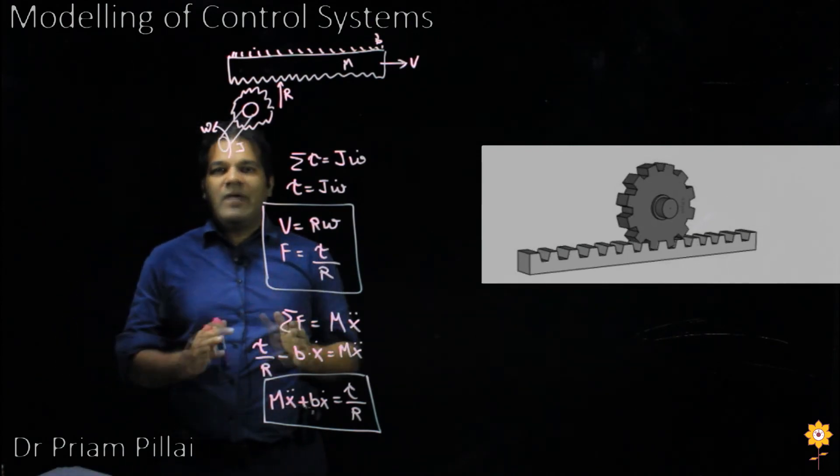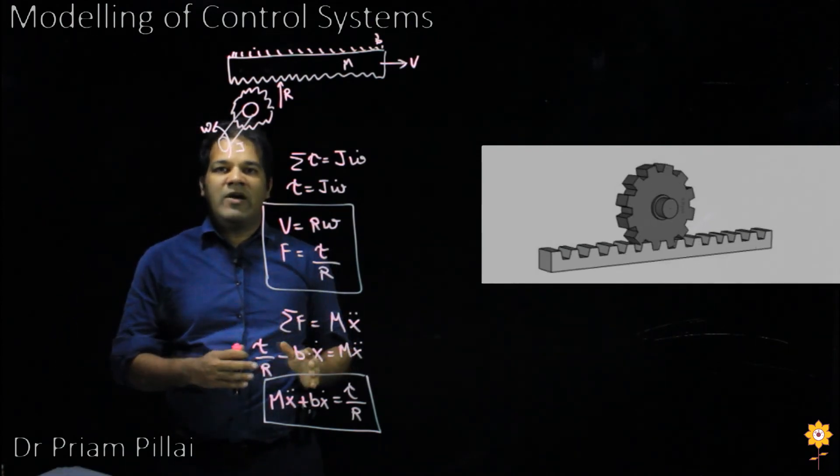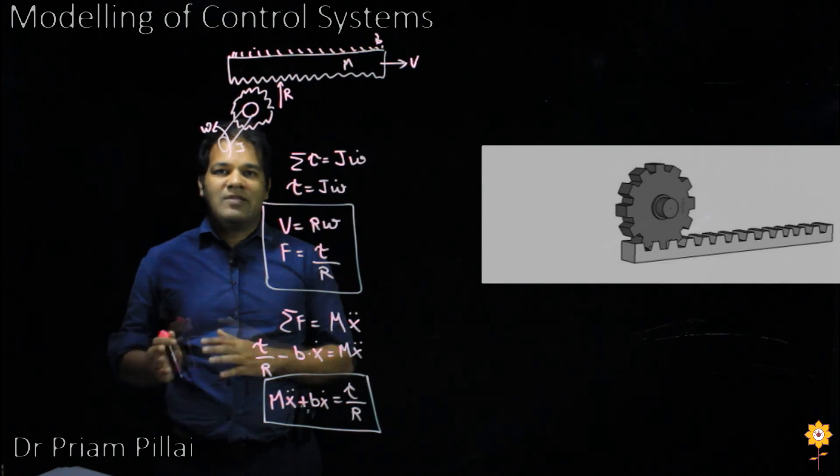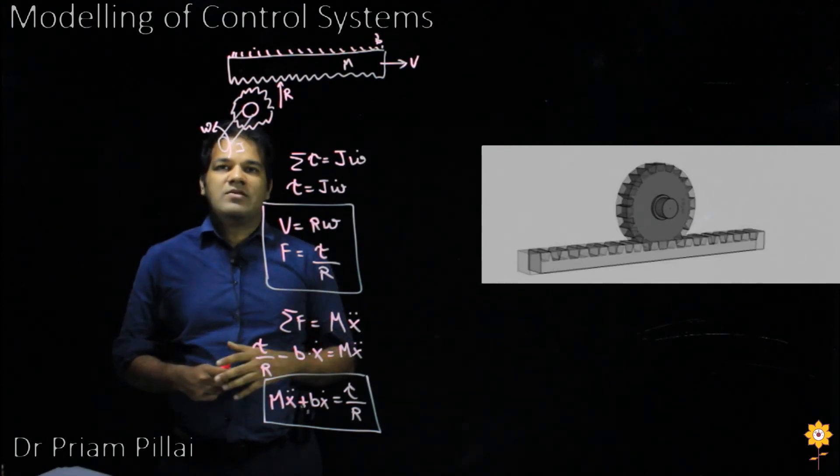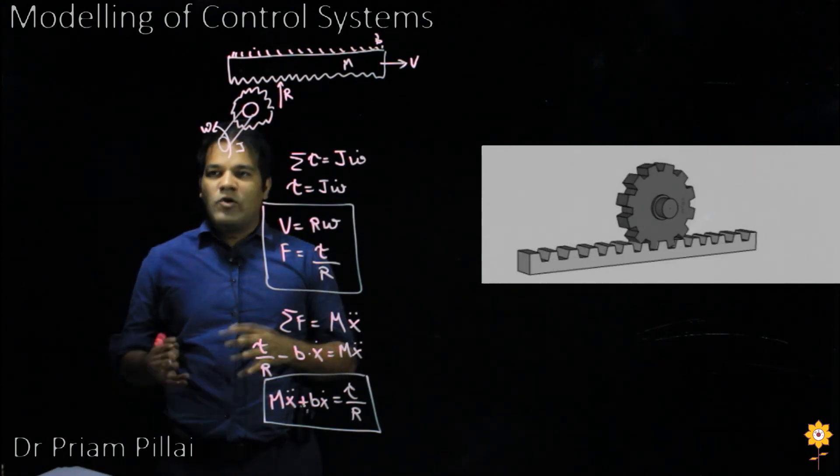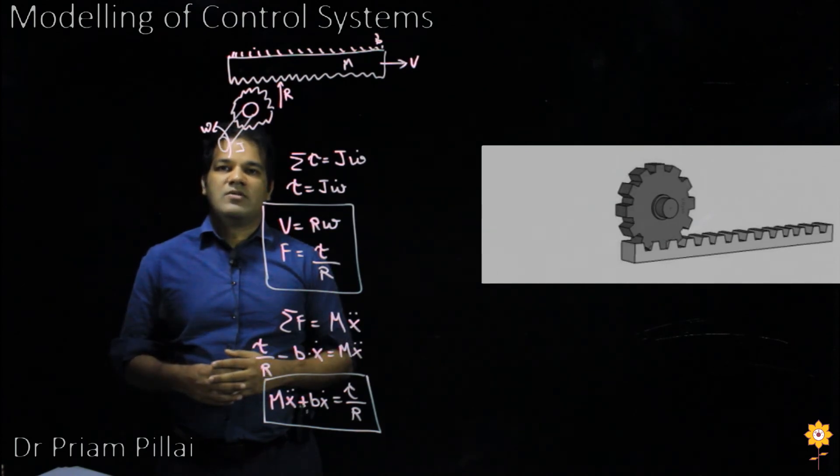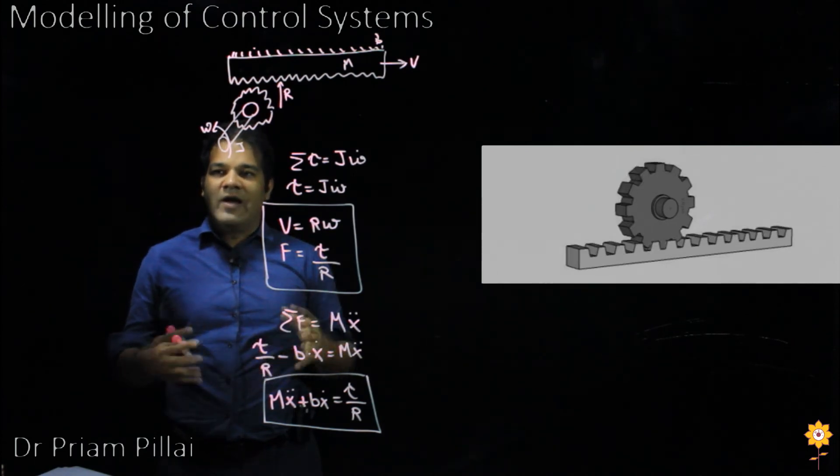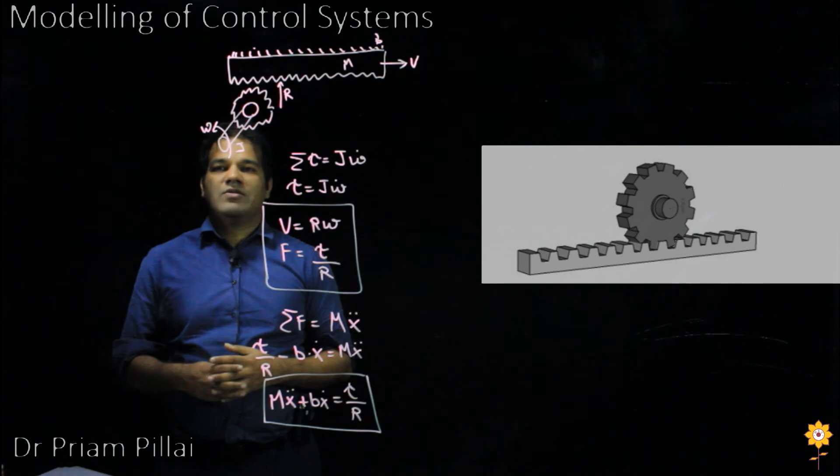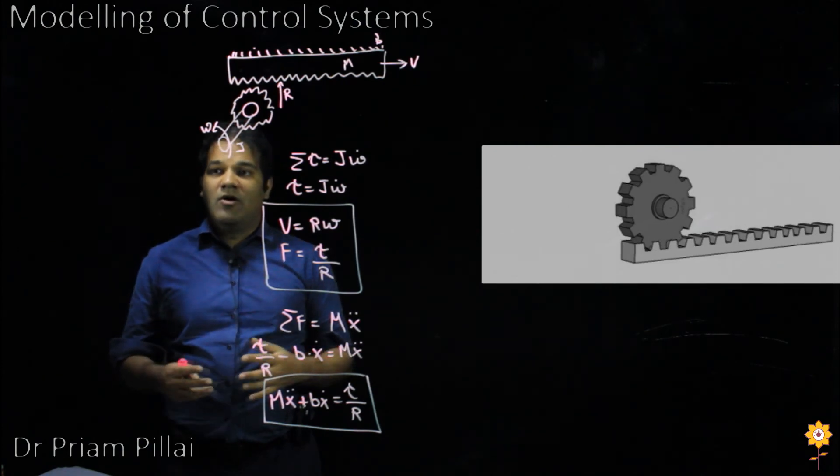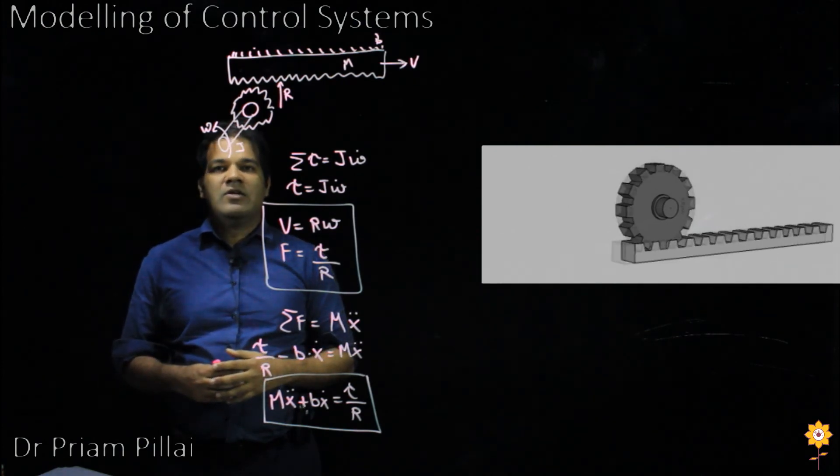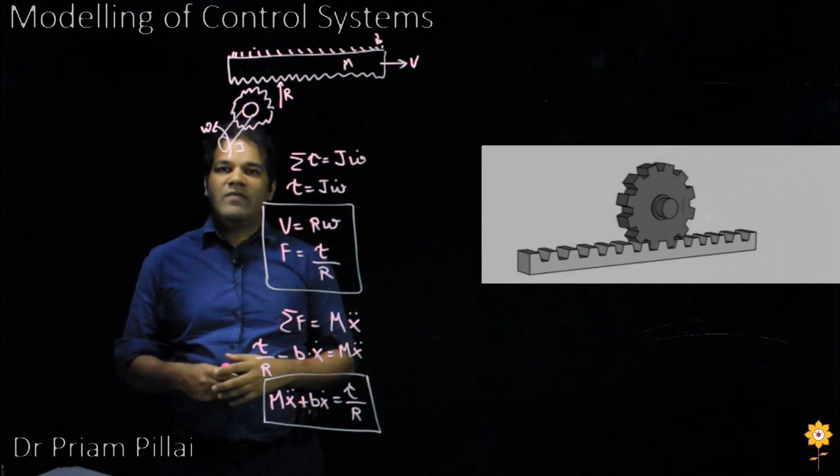We have seen many different types of systems: mechanical, rotating mechanical systems, translating systems, electrical systems, and even combinations of systems like motors. And in all of them, we end up getting similar sort of differential equations that can be solved rather easily with various tools and techniques that we have.